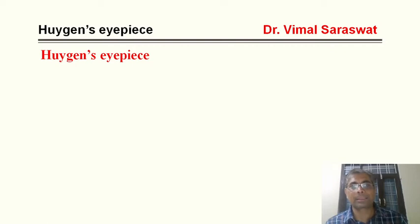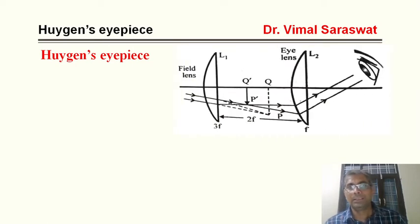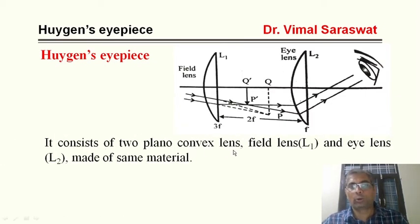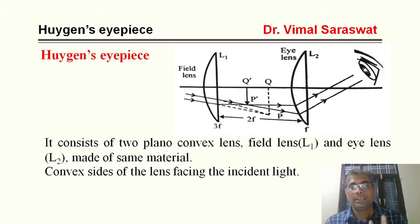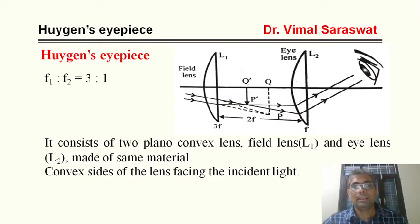This is the ray diagram of Huygens' eyepiece. Here we have a field lens and this is the eye lens. So L1 is the field lens and L2 is the eye lens. It consists of two plano-convex lenses — field lens L1 and eye lens L2. Both are made of the same material, with the convex sides of both lenses facing the incident light.